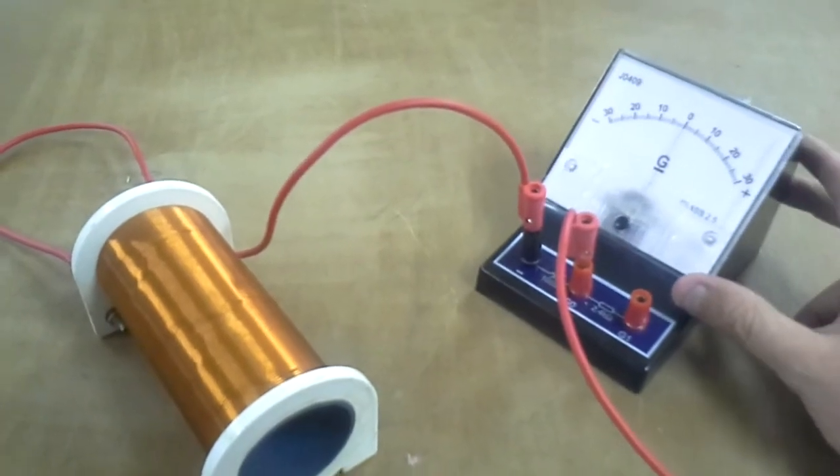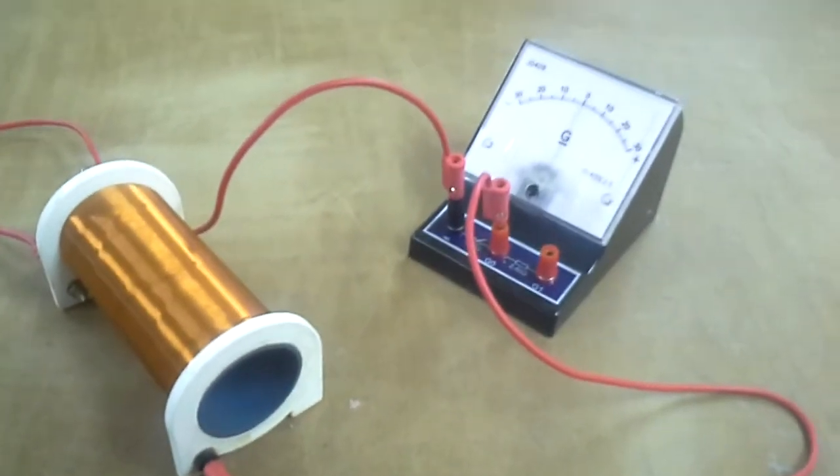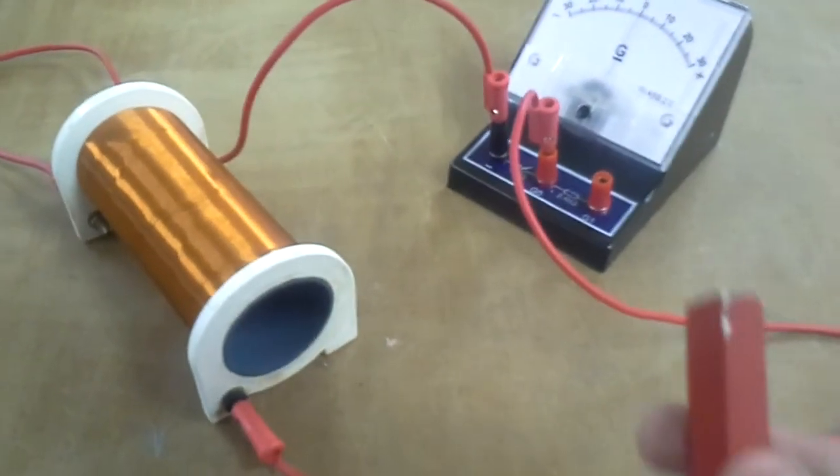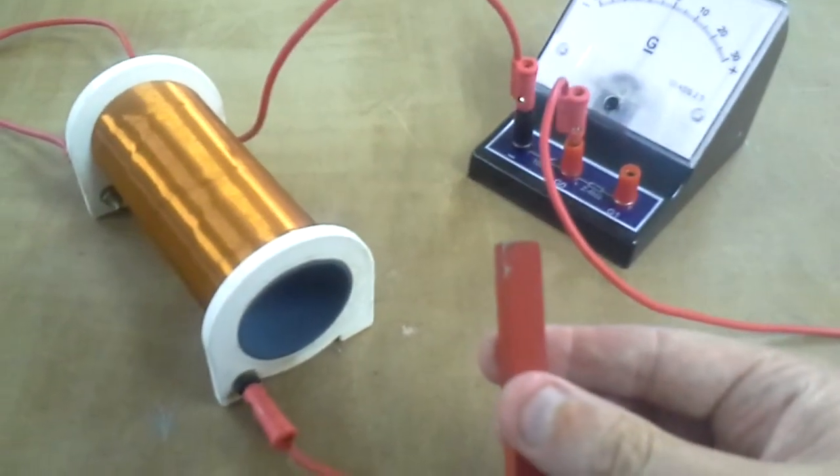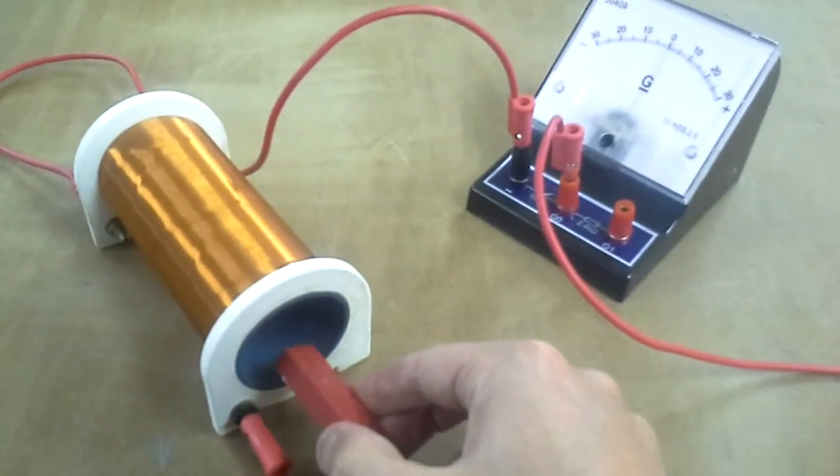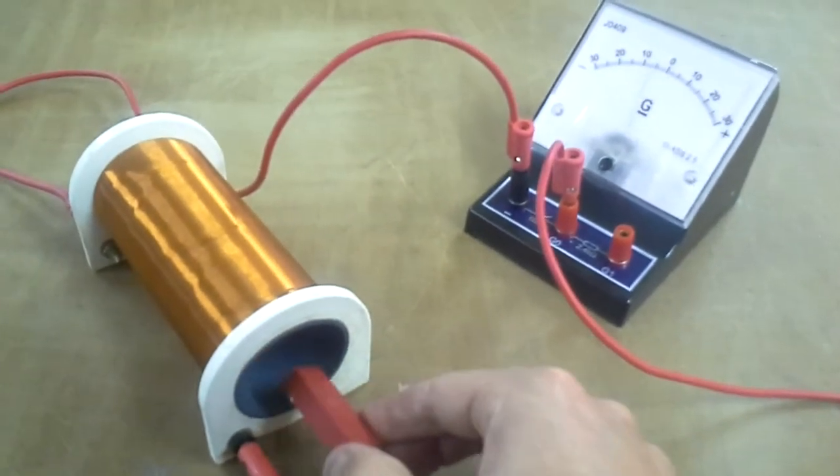Now for electromagnetic induction, all I need is a bar magnet. What I'm going to do is place the bar magnet near the solenoid.